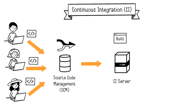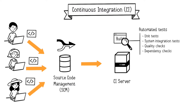Jenkins triggers an automated build and test process. Depending on the programming language, Jenkins calls a service responsible for compilation. For example, Maven is used for compiling Java code. Compilation involves creating a build, which is an executable version of the application derived from the source code and third-party dependencies. These third-party dependencies are typically open-source libraries.